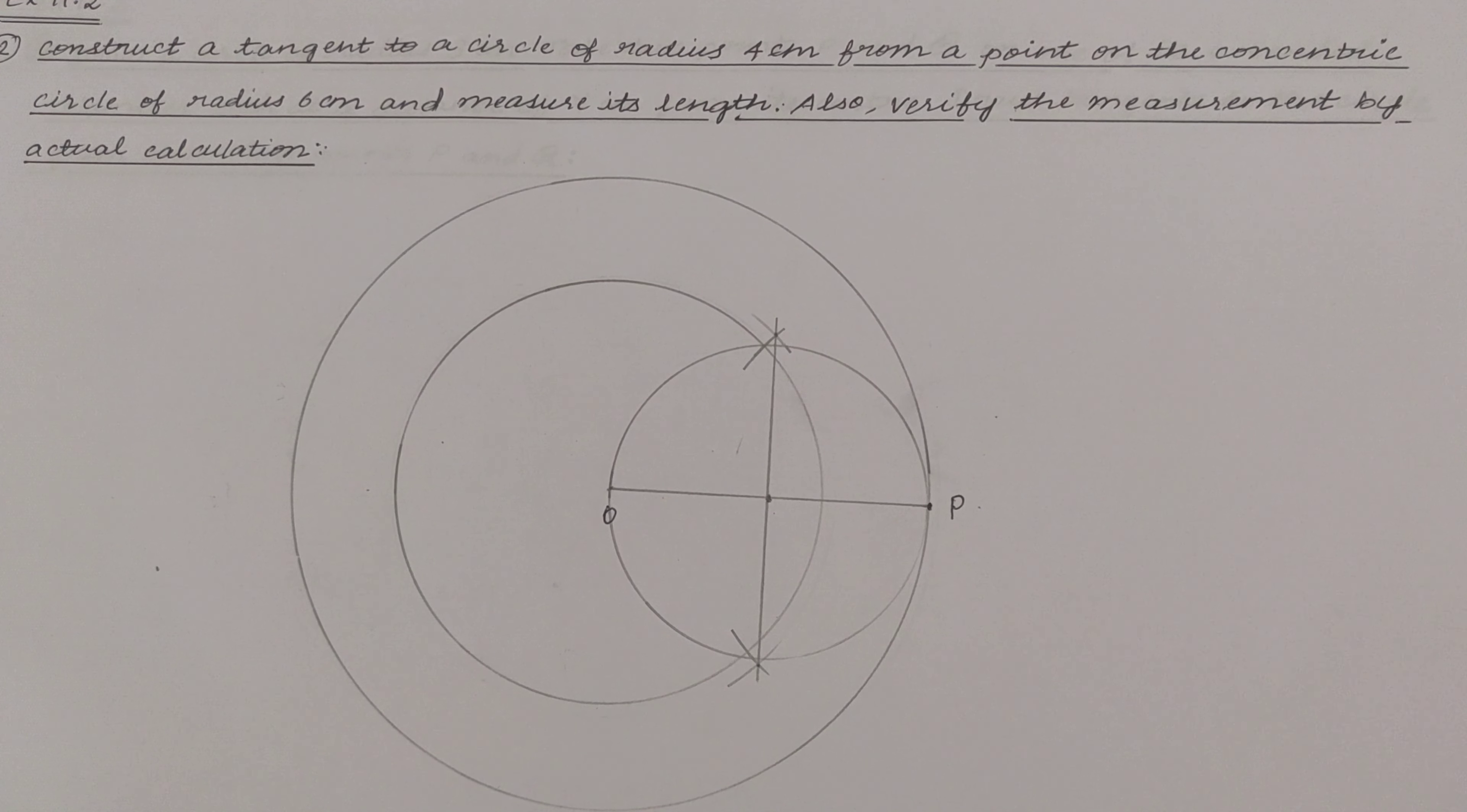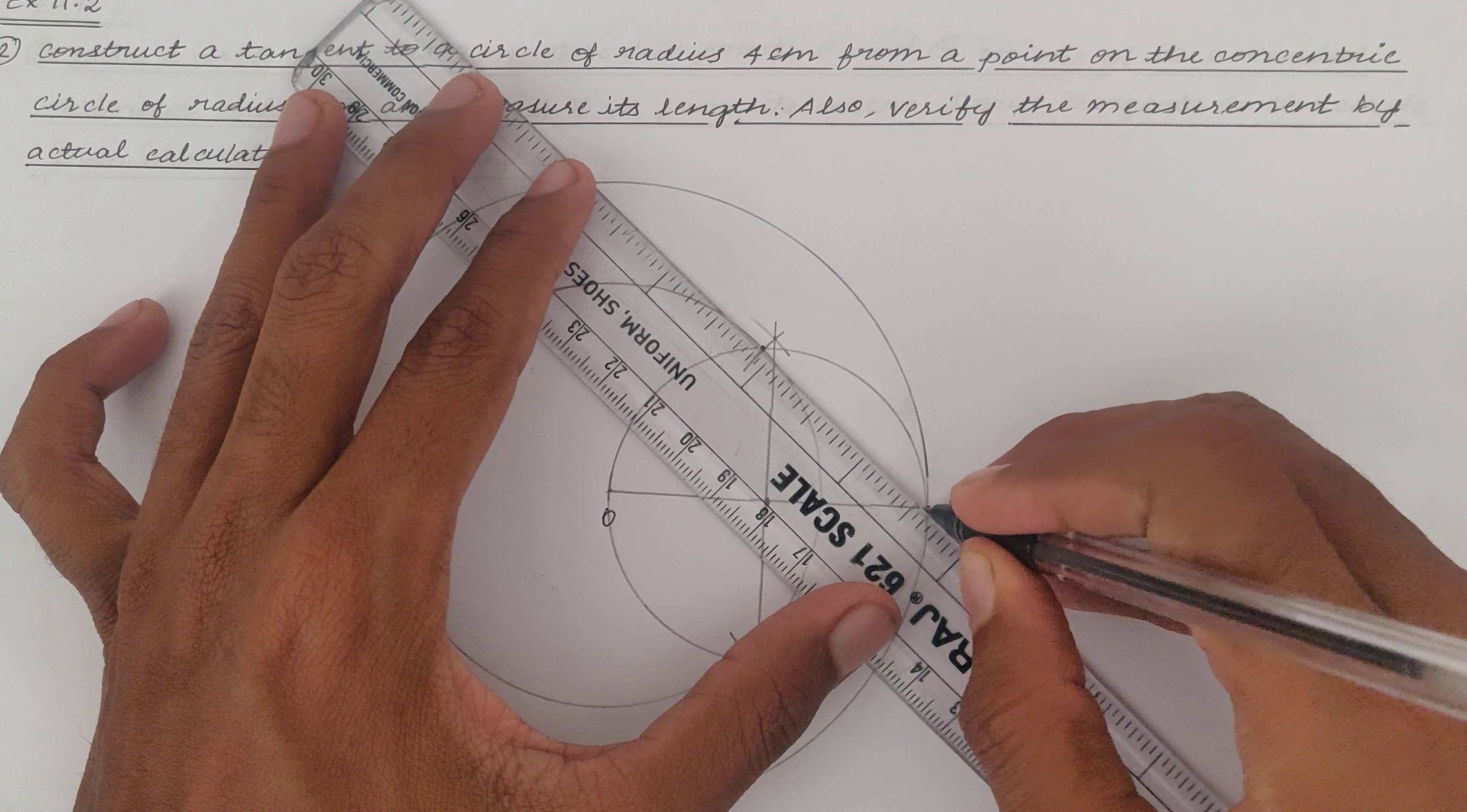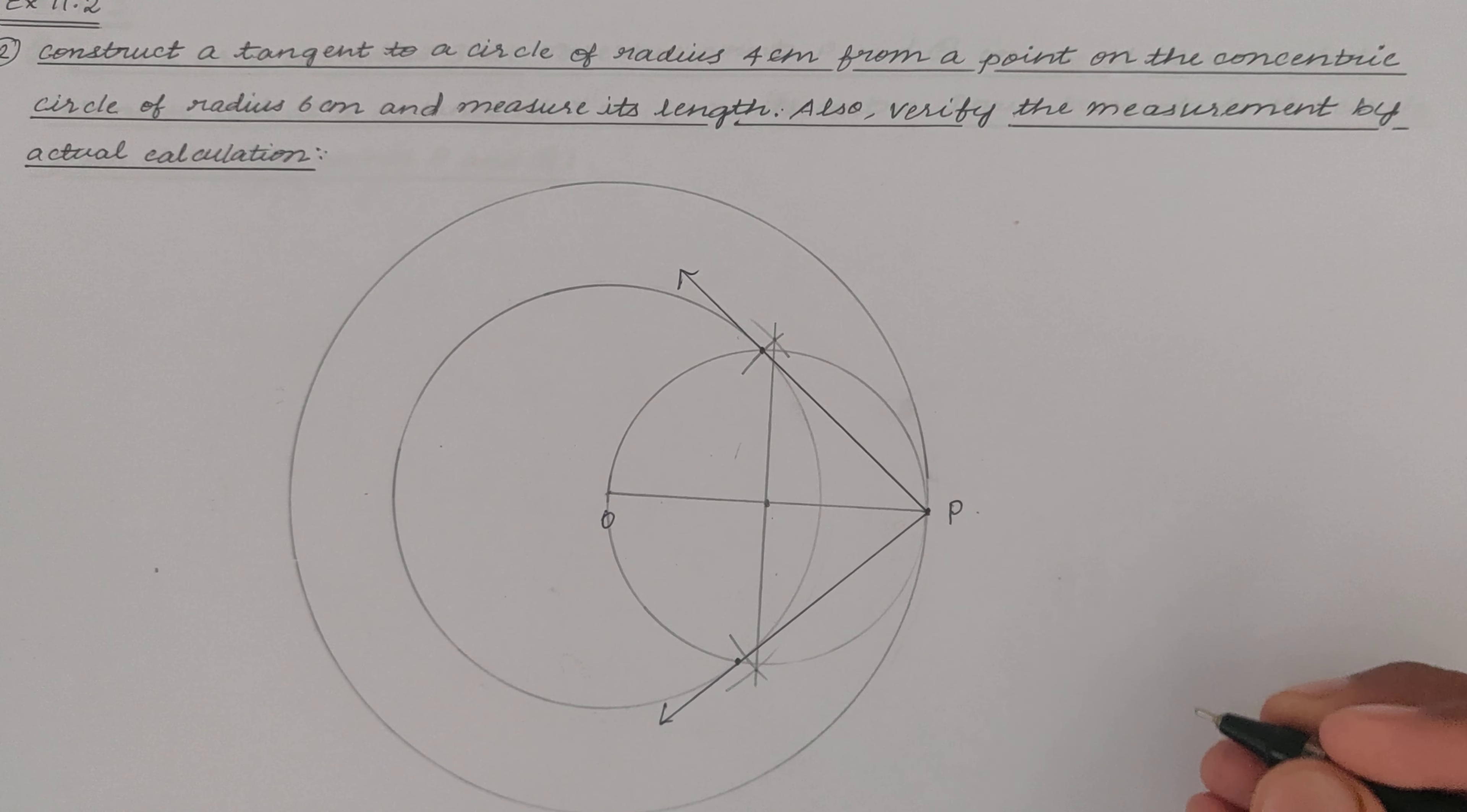Now the inner circle and the circle that we just drew will meet at two points. The points of intersection of the two circles are the points of contact to which we need to draw the tangents from point P. So from point P through the points of intersection of the two circles, you draw a tangent. Similarly from the point P through the points of intersection of the two circles, you draw a tangent.